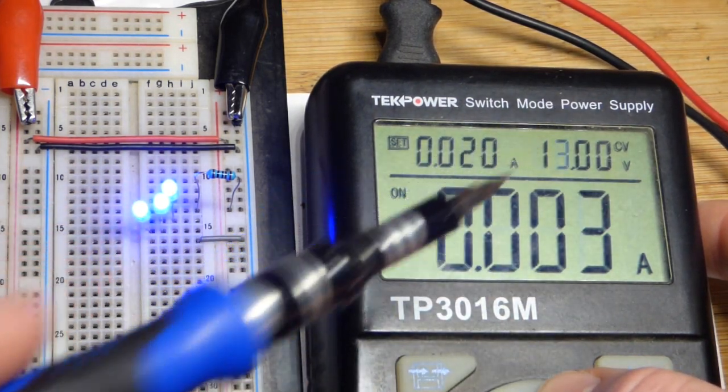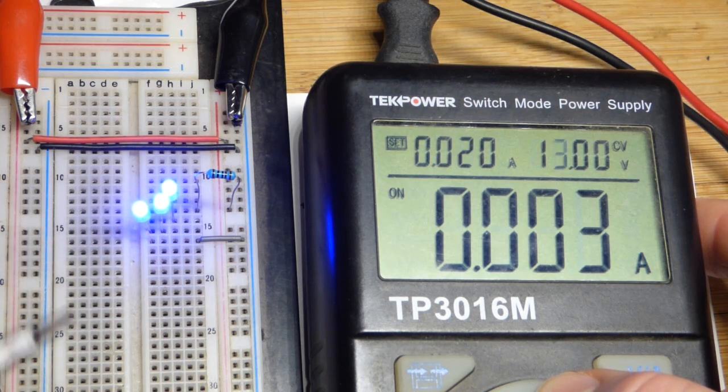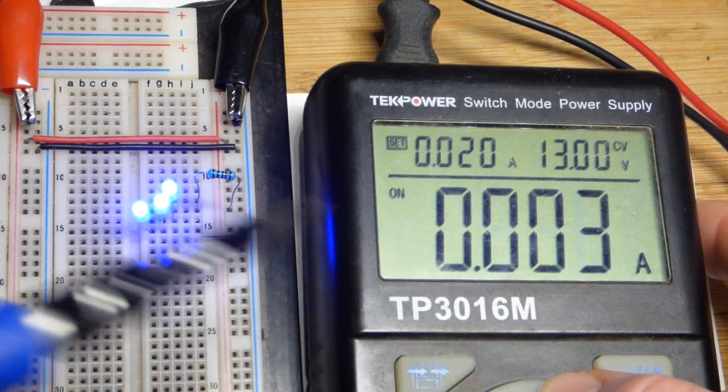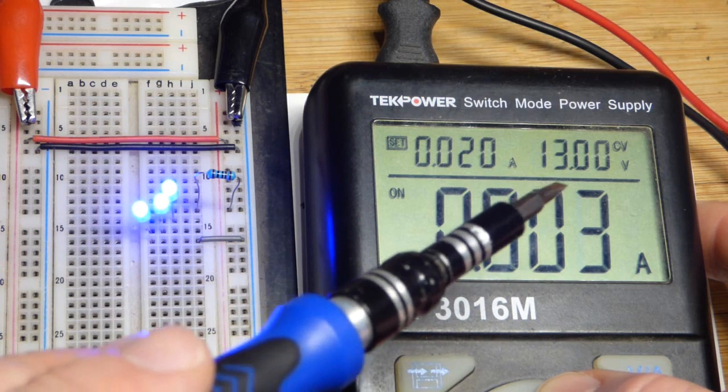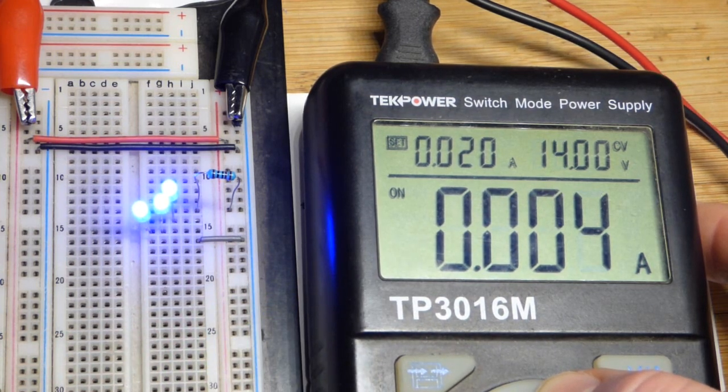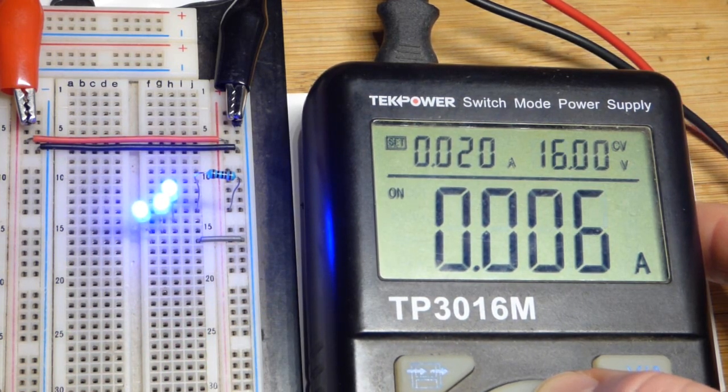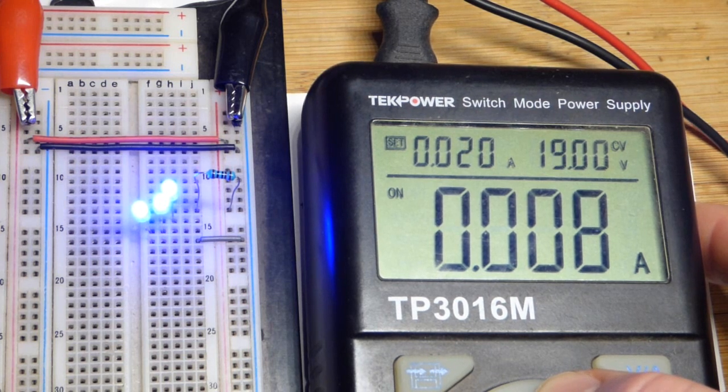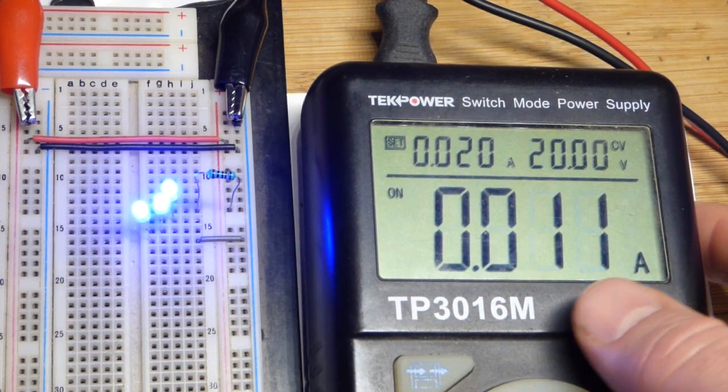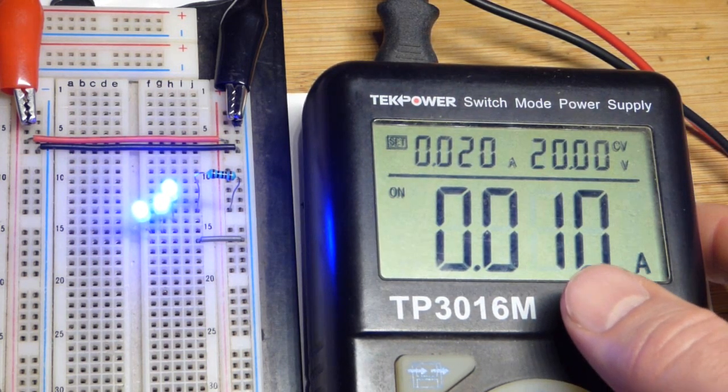So we're going to go to 13 volts. Here's another nice thing about the blue LEDs. Since the current is low and the LEDs are bright, we can actually adjust the voltage a lot higher than we did with the red LEDs. So there you can see.